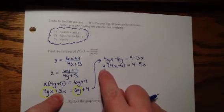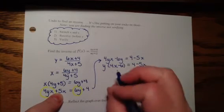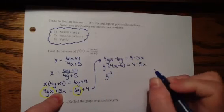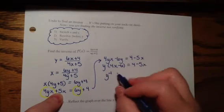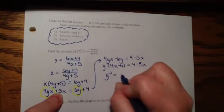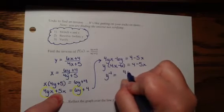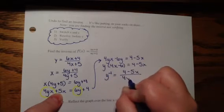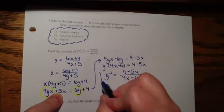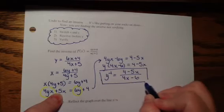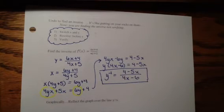Now you can solve for y, and I'm actually going to write y-inverse — please make sure you remember to write the inverse notation because we have now found the inverse. So y-inverse equals 4 minus 5x over 4x minus 6, and you have now found the inverse. Don't worry, we're going to practice some more tomorrow.